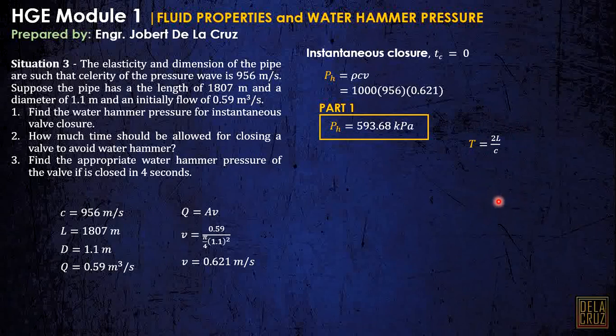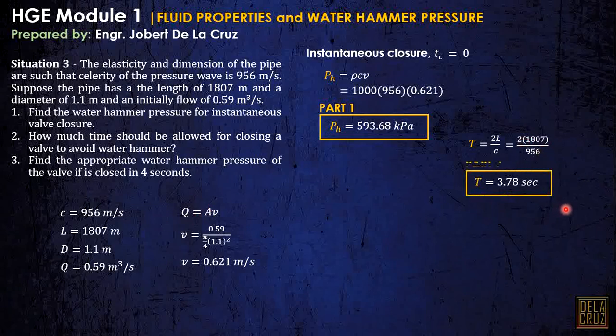Direct substitution: 2L over C. We have the length, we have C = 956 m/s. This is the time required to avoid the water hammer pressure.